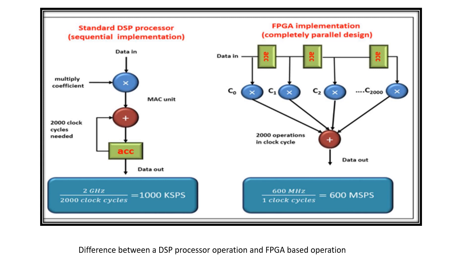Now, coming to the difference between DSP and FPGA. A DSP chip can be ten to a thousand times faster on an FPGA. The key difference is in execution time — when you have completely parallel implementations, many operations can be done in just one clock cycle. This parallel operation provides significant time saving, making FPGA-based systems much faster.